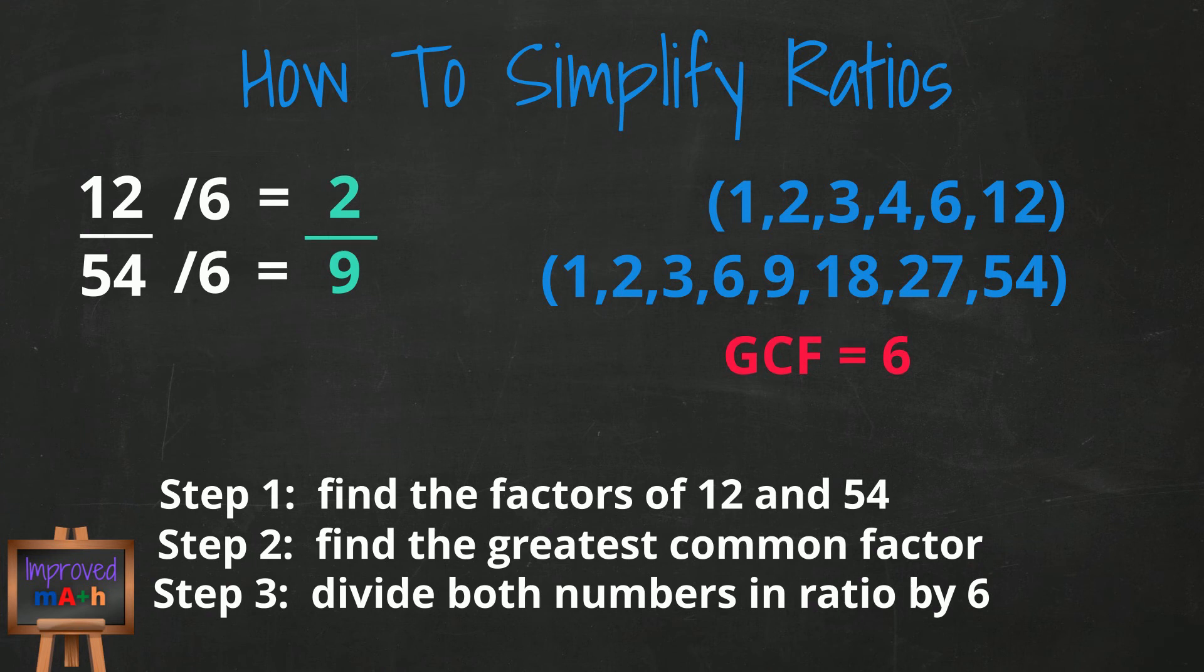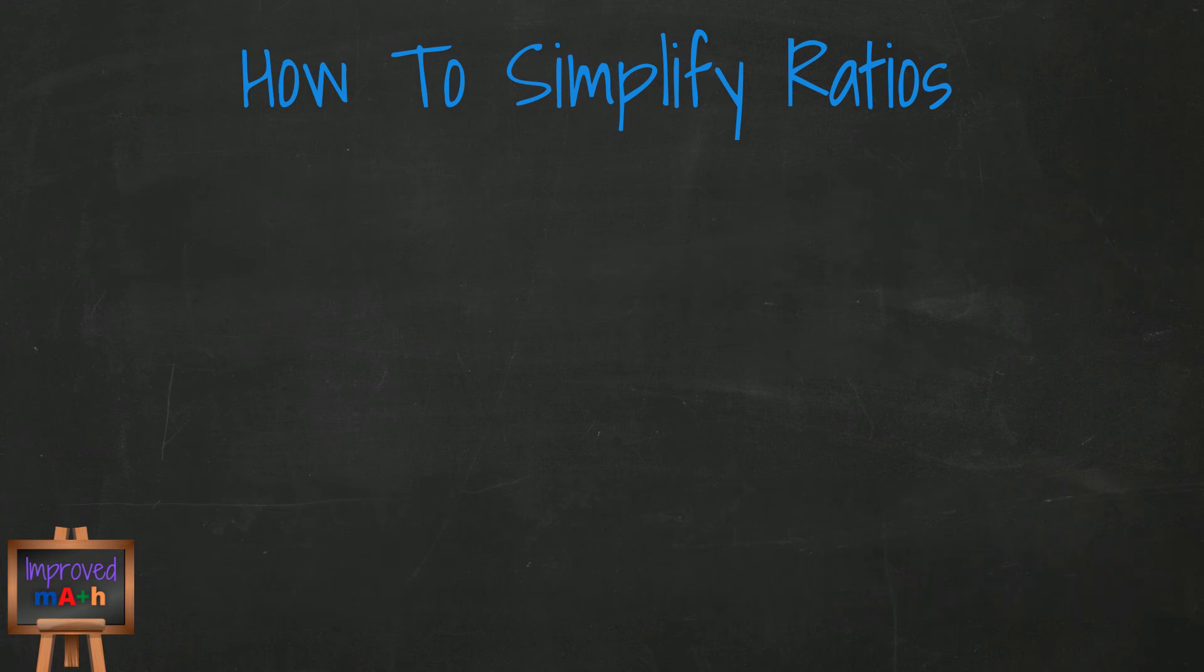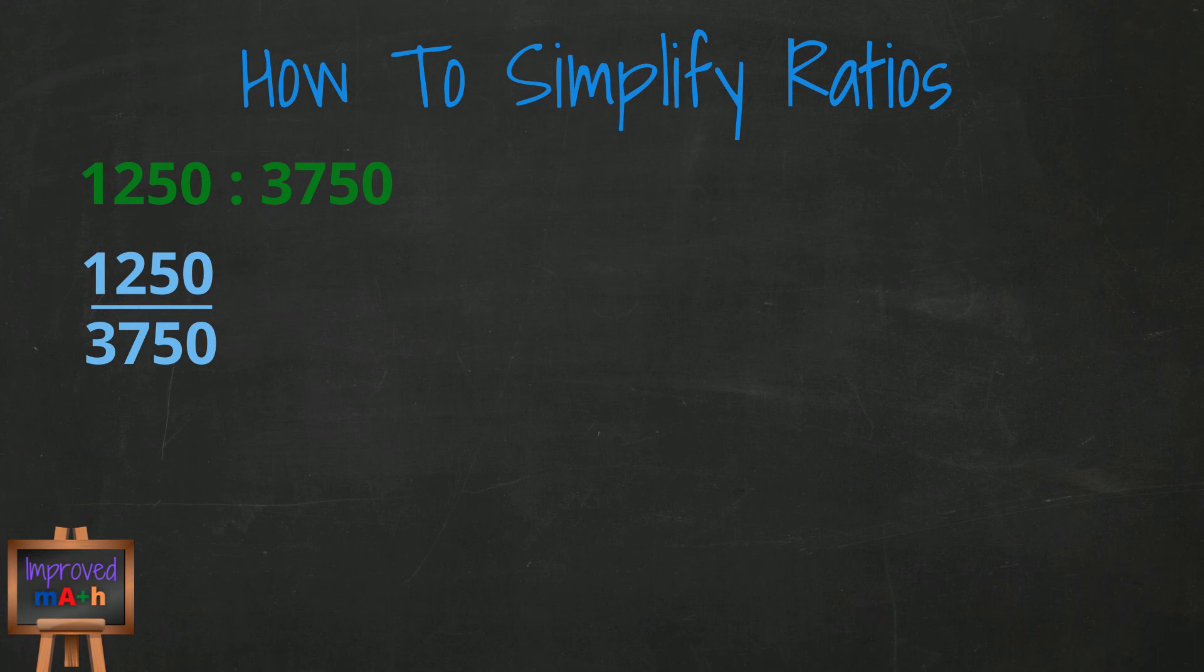But what if you had an example like 1,250 to 3,750? These numbers are really large and likely to be difficult to factor in your head. I'll show you a little trick on how you can reduce the numbers down to a point that's a little bit more manageable.